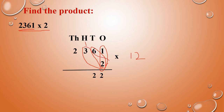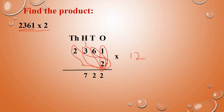How to multiply with the hundreds place: 3 into 2, that is 6. 6 plus 1 carry is 7. Next, in the thousands place: 2 into 2, that is 4. So the answer is 4722.